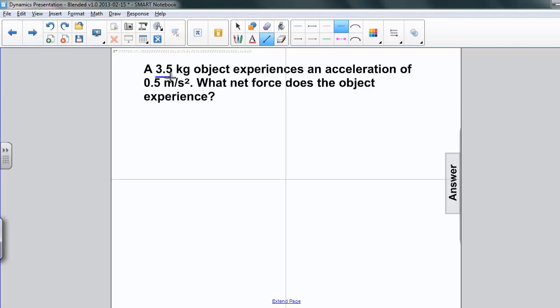Let's do our usual thing and identify the quantities that we're given. 3.5 kilogram mass, a 0.5 meter per second squared acceleration. And we're asked to find the net force.